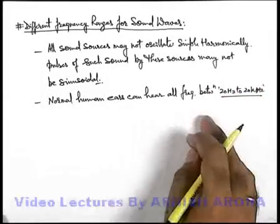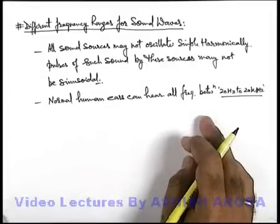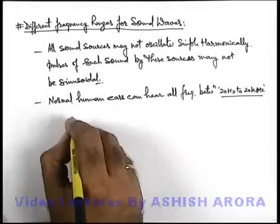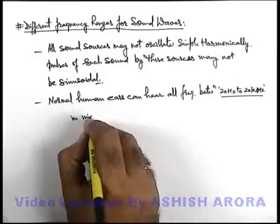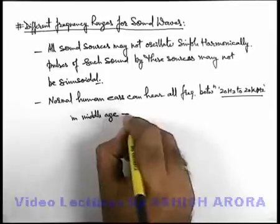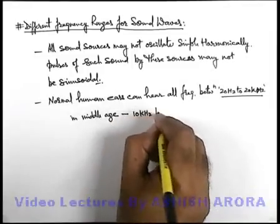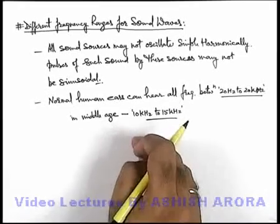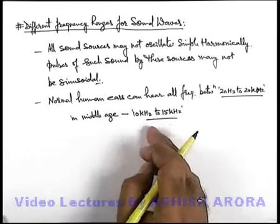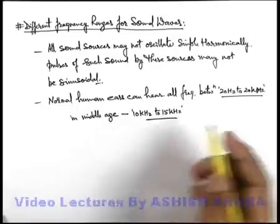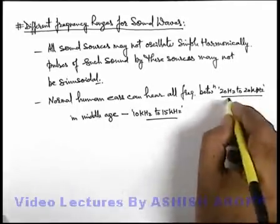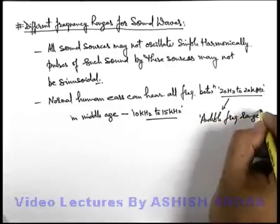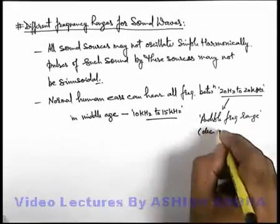This is the range which you might have studied in your early classes. As the age of the human ear increases, the range decreases. In middle age, this range is approximately from 10 kilohertz to 15 kilohertz — very high frequencies are no longer audible. This 20 hertz to 20 thousand hertz is called the audible frequency range, and it decreases with age.